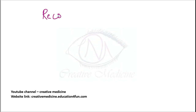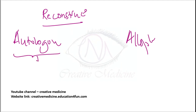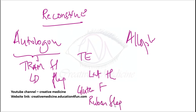After breast conservative surgery, you should do breast reconstruction. Autologous flaps used for breast reconstruction include TRAM flap (transverse rectus abdominis muscle flap), latissimus dorsi flap, thoracoepigastric flap, lateral thigh flap, gluteal flap, and Rubens flap.